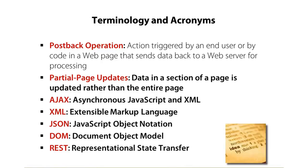With AJAX, it's kind of the opposite — we don't want to refresh the entire page. We want to do something called a partial page update, where we only update a section or part of the overall page when a user clicks a button, clicks on a hyperlink, or interacts with a menu. Partial page updates allow us to get the data we need and display it to the user without having to reload the entire page like traditional apps have done.